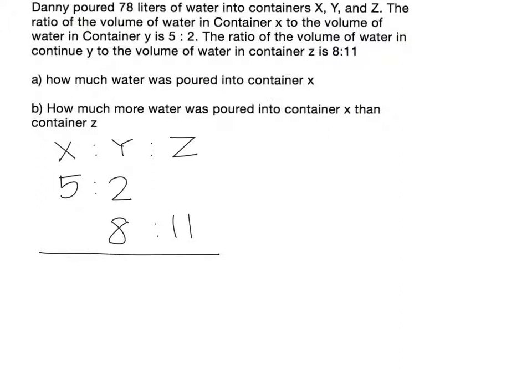So you can see that y in the first ratio is 2 units and y in the second ratio is 8 units. But both y are the same amount of water. So we will equalize these two numbers 2 and 8. To find a common multiple of 2 and 8, that would be 8.